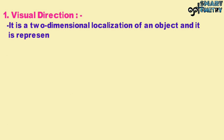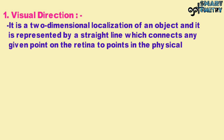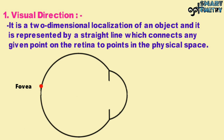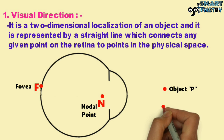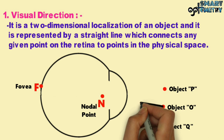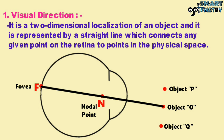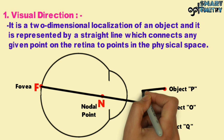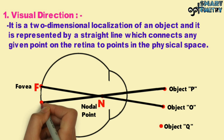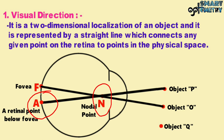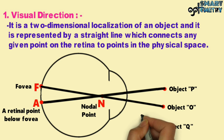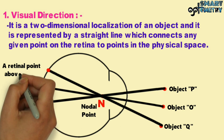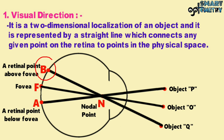Visual direction is the two-dimensional localization of an object, represented by a straight line which connects any given point on the retina to points in the physical space. In the diagram, the fovea is represented by point F, the nodal point by N, and the objects by P, O, and Q. The line of sight from object O joins the fovea at point F while passing through the nodal point N. The line of sight from object P joins a retinal point below the fovea at point A, and from object Q joins a retinal point above the fovea at point B, both passing through nodal point N.